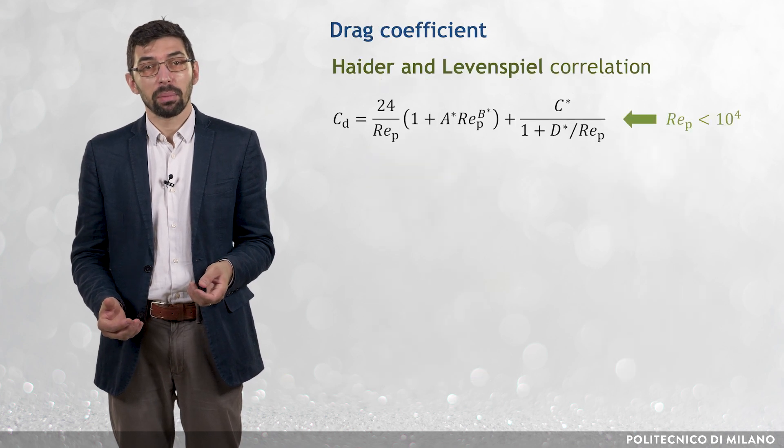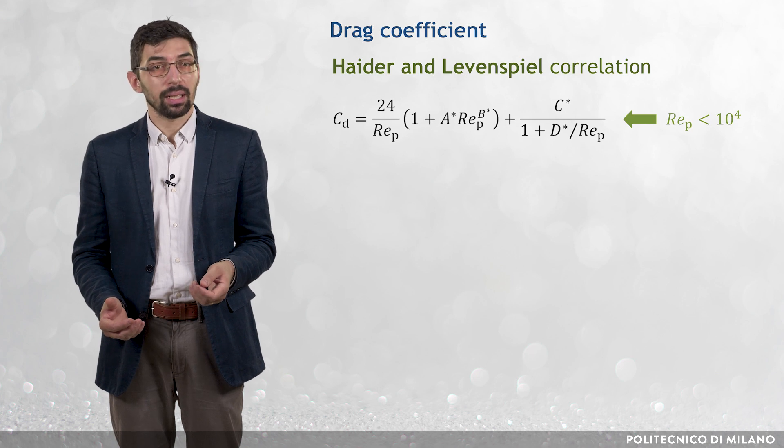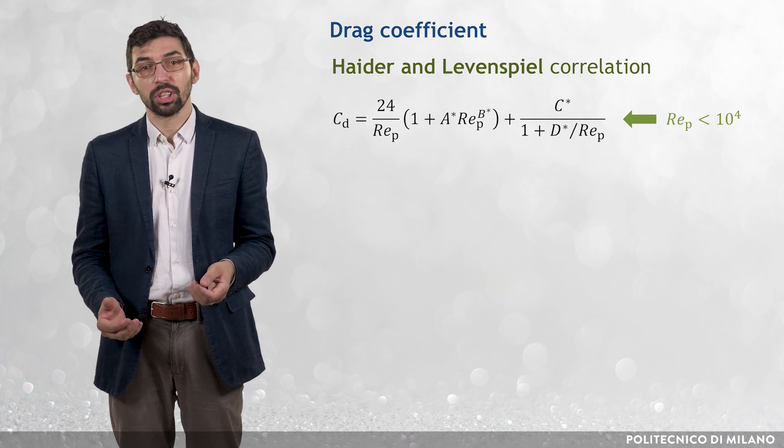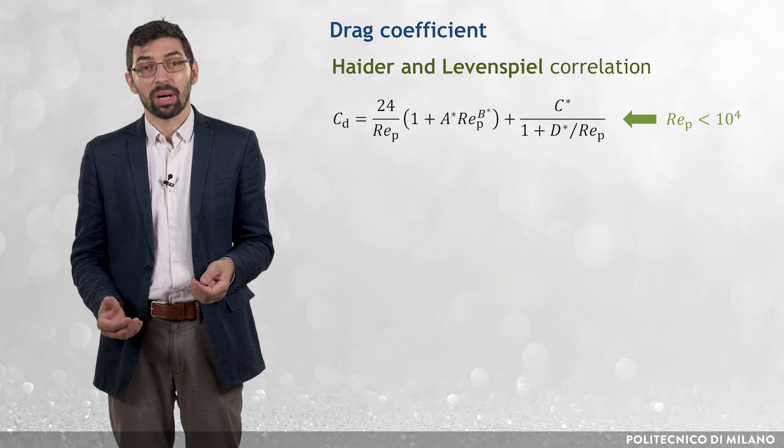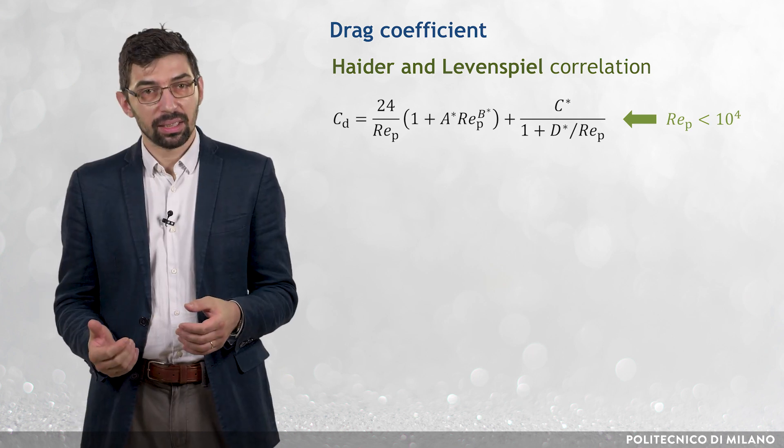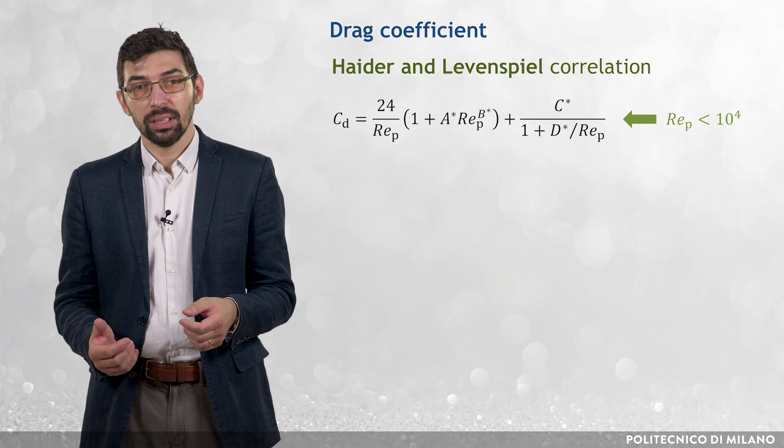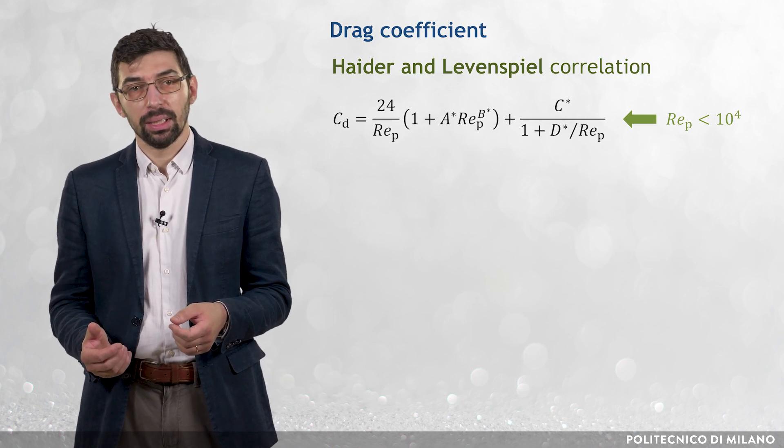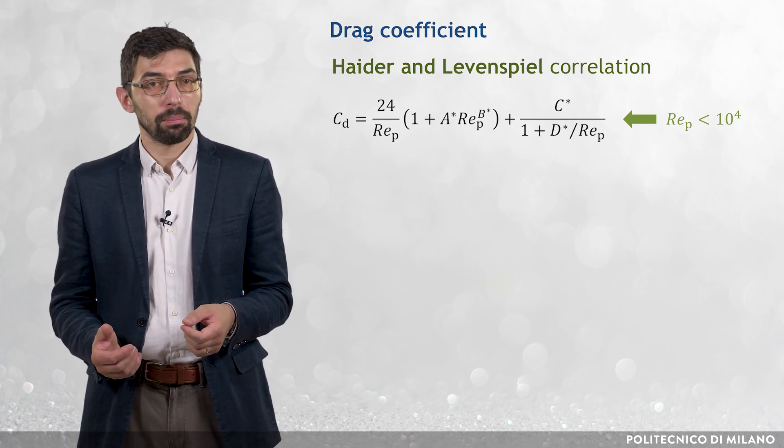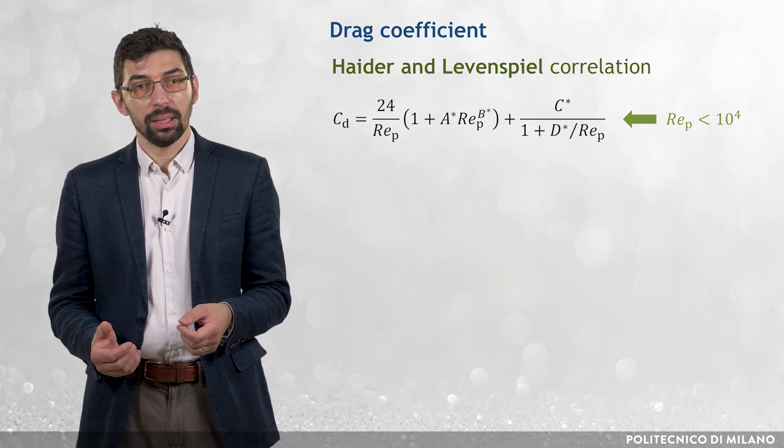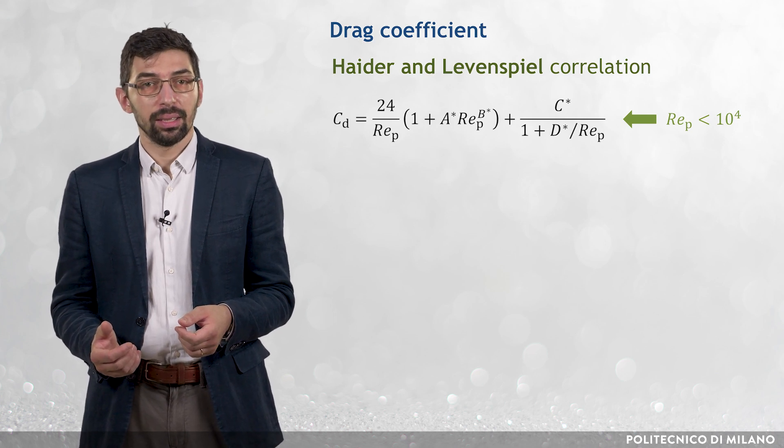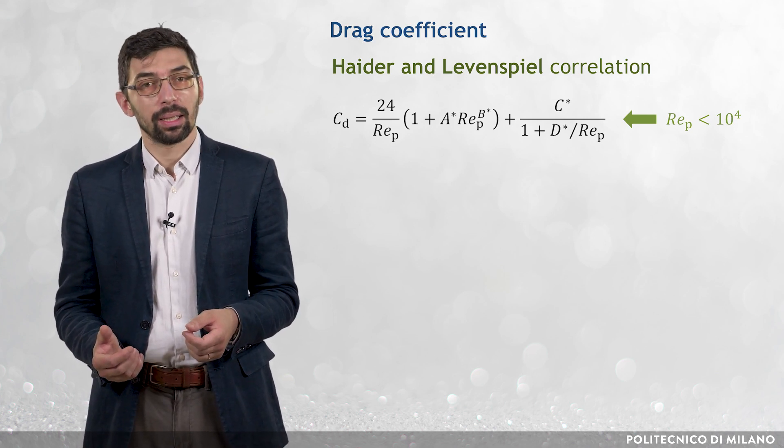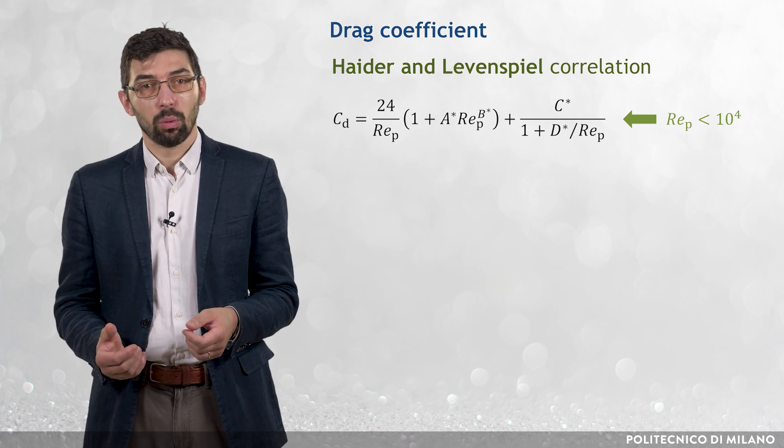The formula by Heider and Levenspil can be regarded as a generalization of the Schiller and Naumann formula for non-spherical particles up to a particle Reynolds number of about 10^4. It says that the drag coefficient is equal to 24 divided by Rep times (1 plus A* times Rep elevated to power B*) plus C* divided by (1 plus D* divided by Rep),